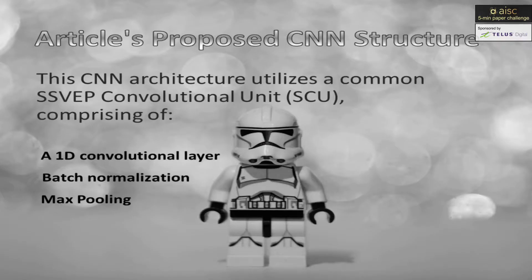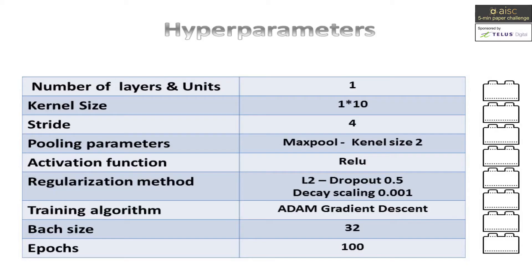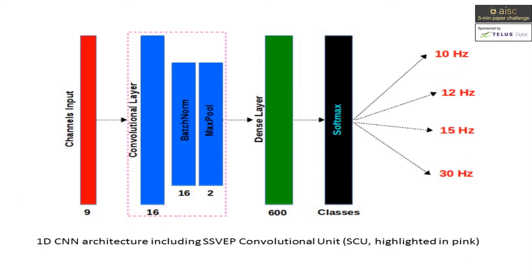The article proposes a CNN architecture comprising a 1D convolutional layer, batch normalization, and max pooling. These are the hyperparameters the authors used to set up the CNN network. The structure of the CNN used in this work is displayed in this picture. The architecture has a large initial filter to capture the frequencies to be classified in the dry EEG data, and batch normalization is used to help counterbalance the noisy EEG data.